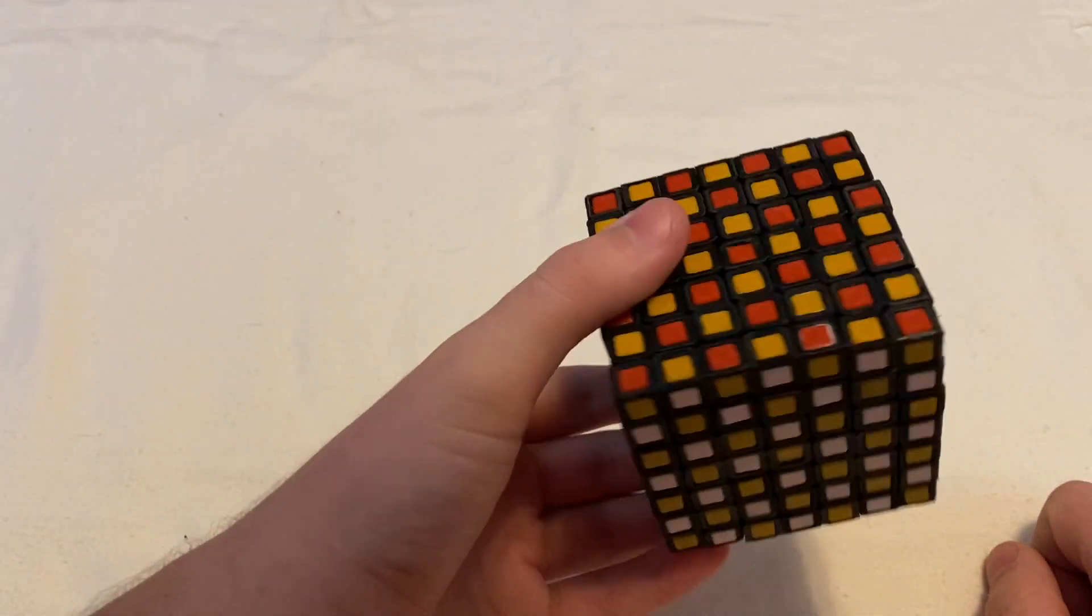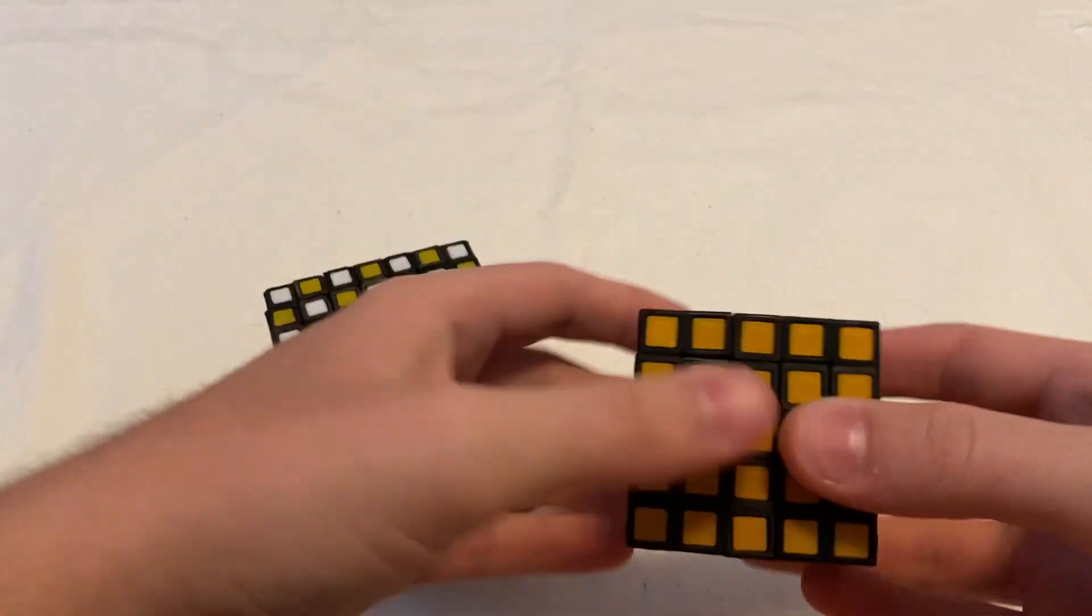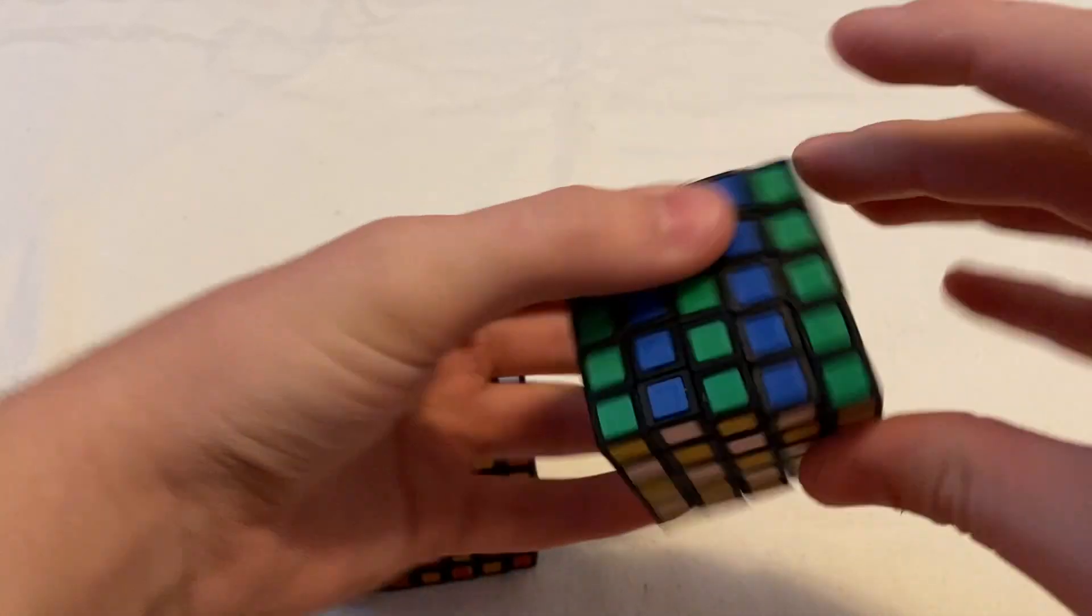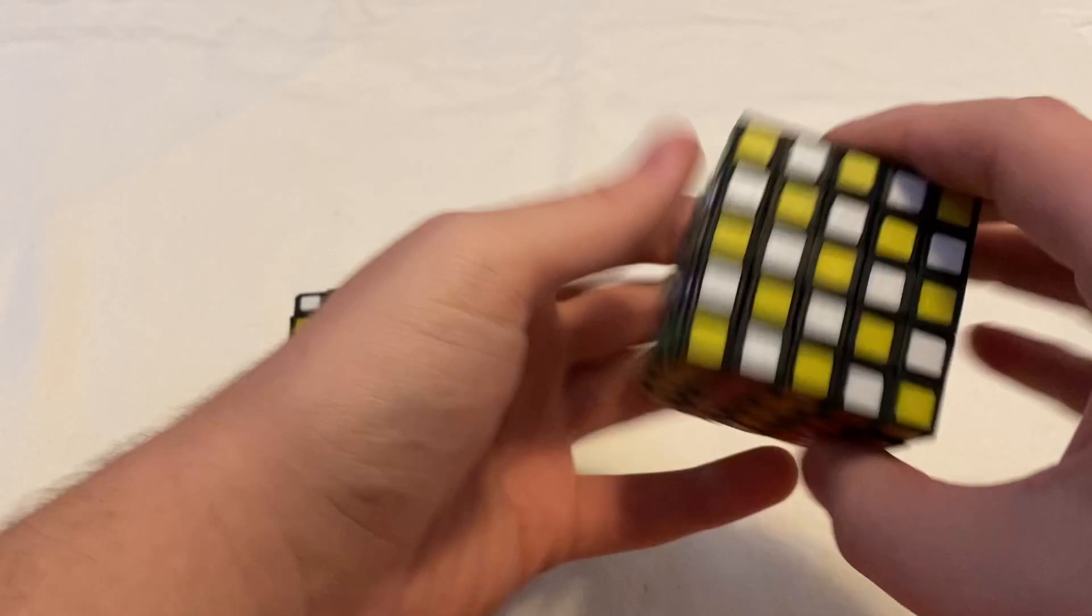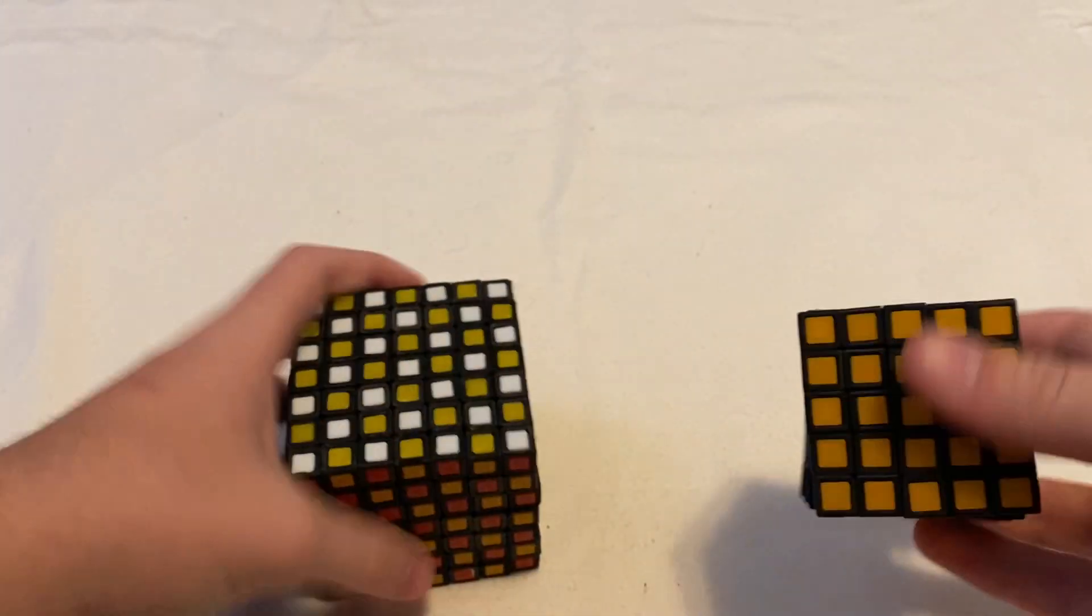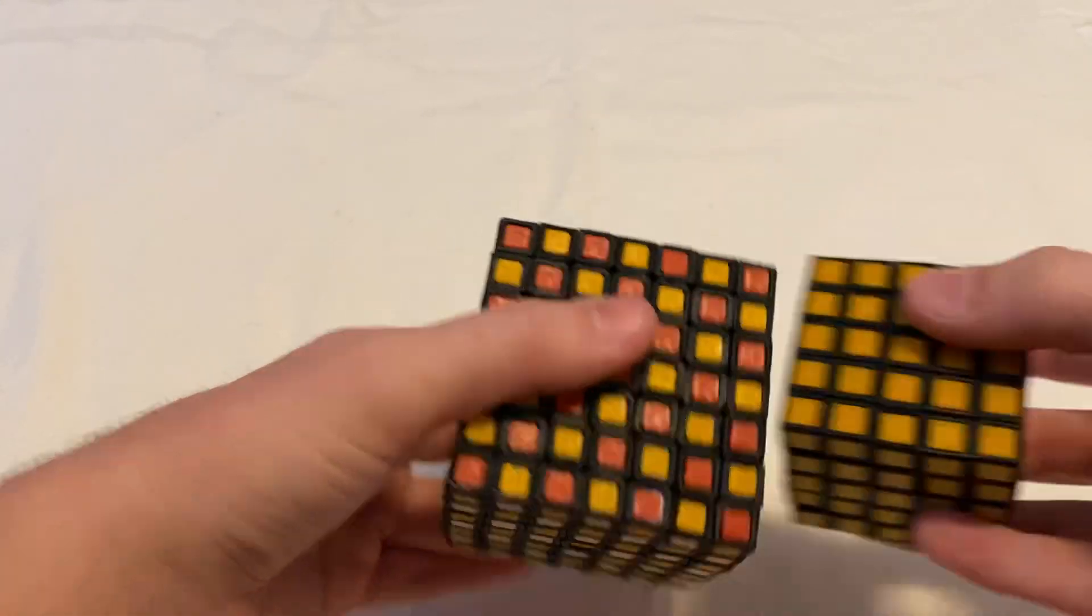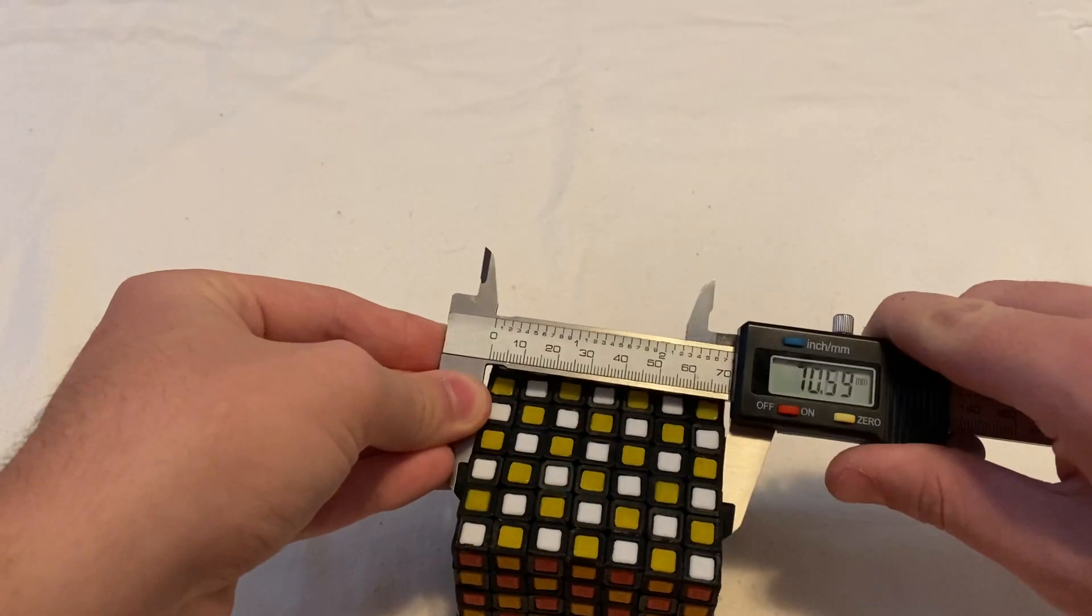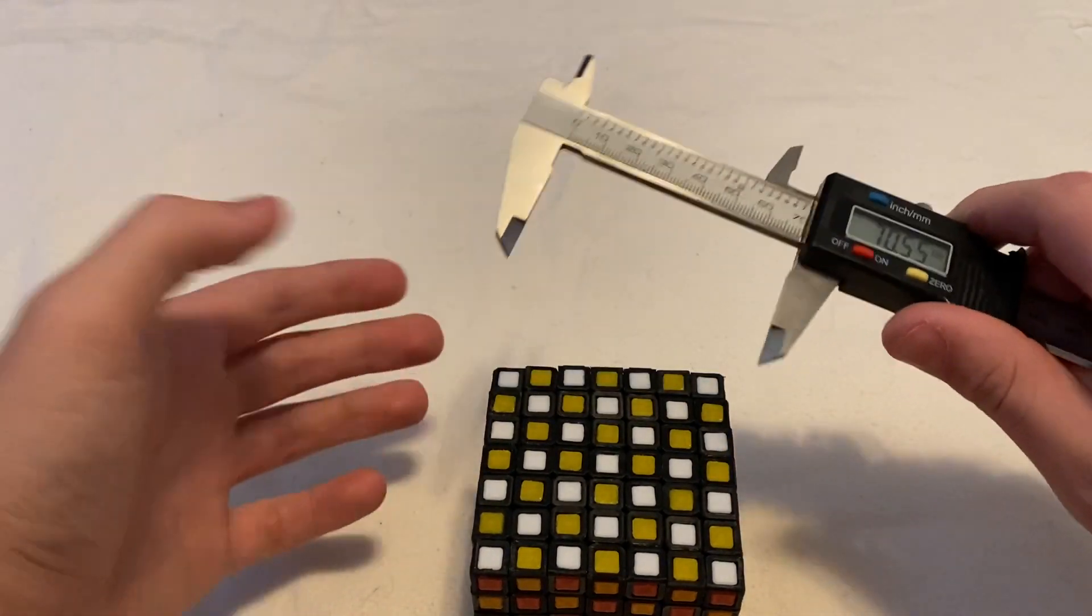This is gonna look really good on my shelf. And here it is next to the 50 millimeter 5x5 that I made years ago. This one, as you can see, works a lot better. And I think the fact that the pieces are the same size also looks really cool. And this cube is 70 millimeters, by the way - I don't know if I mentioned that or not - and each layer is 10 millimeters.